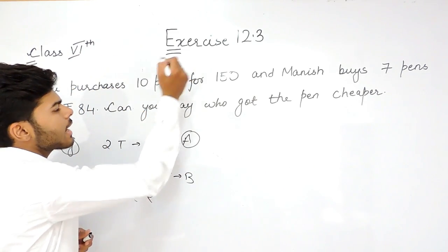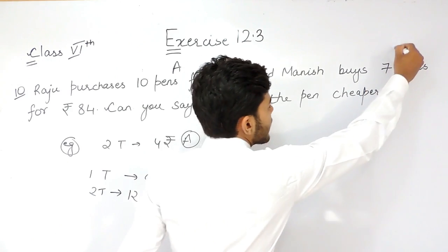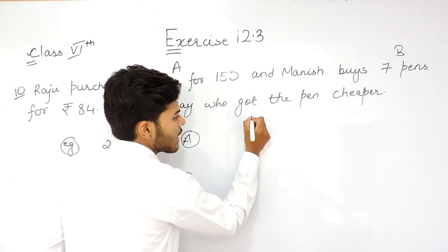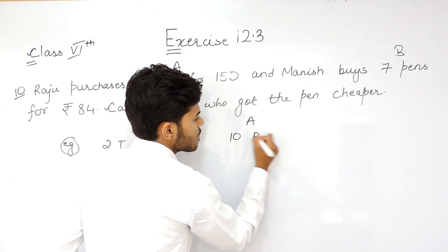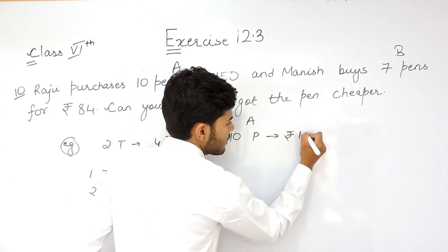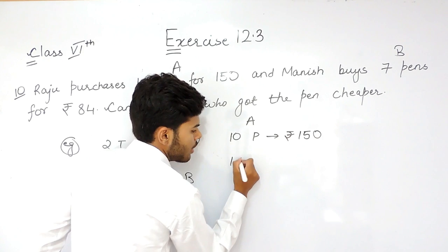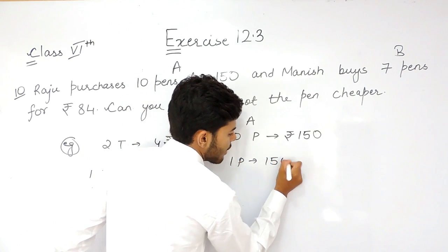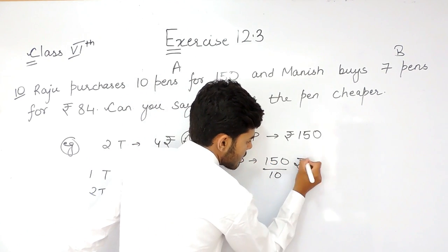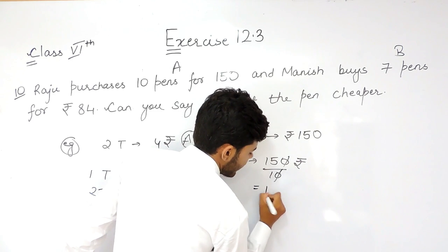Suppose this is category A and this is category B. For category A, 10 pens cost 150 rupees, so 1 pen will cost 150 divided by 10, which equals 15 rupees.